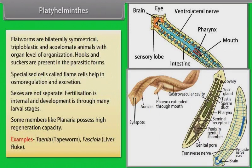Examples: Taenia, that is tapeworm; Fasciola, that is liver fluke.